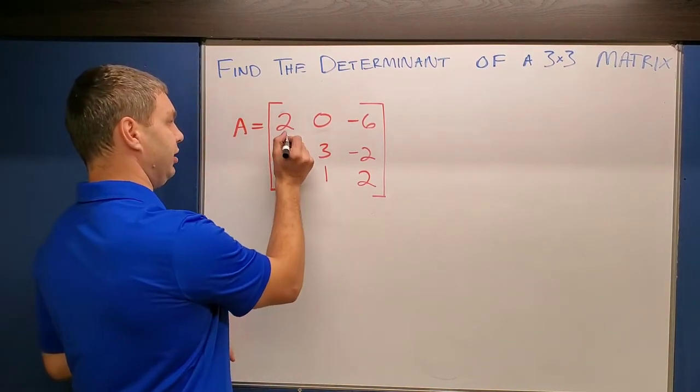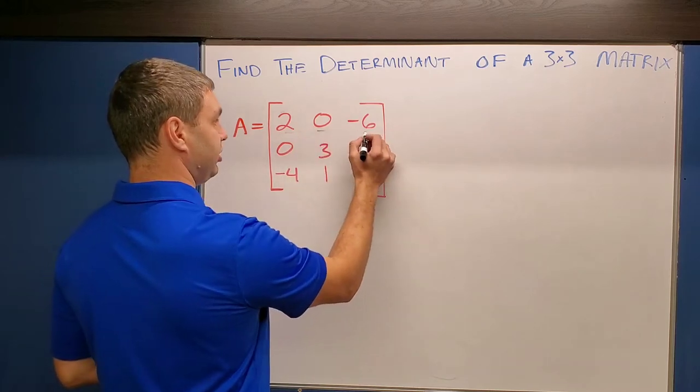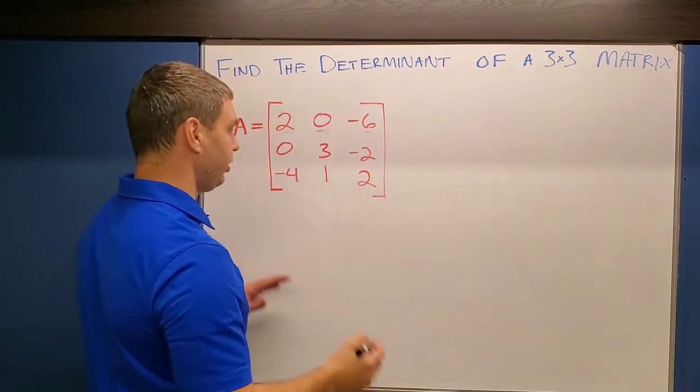The way that we do this, these are our minors, these top row two, zero, and negative six. And we're going to take those numbers.